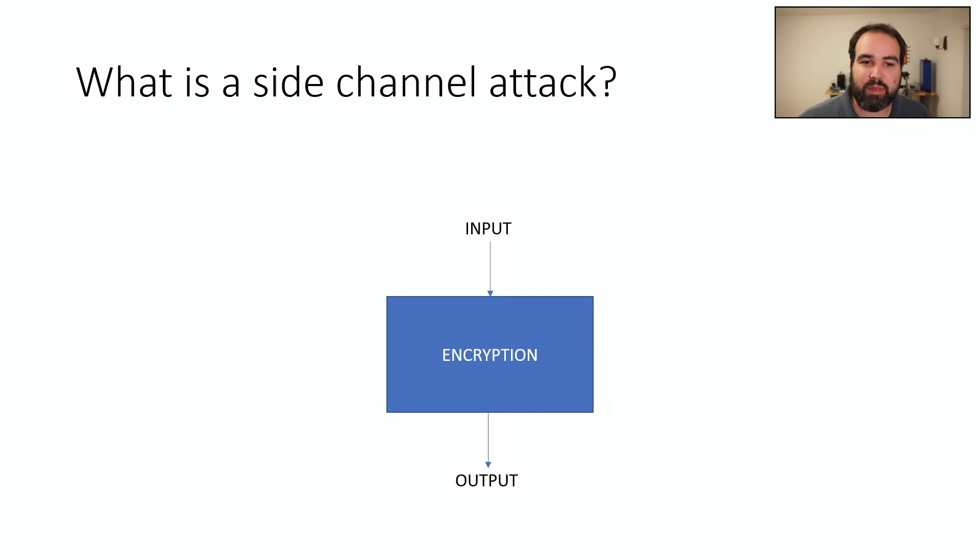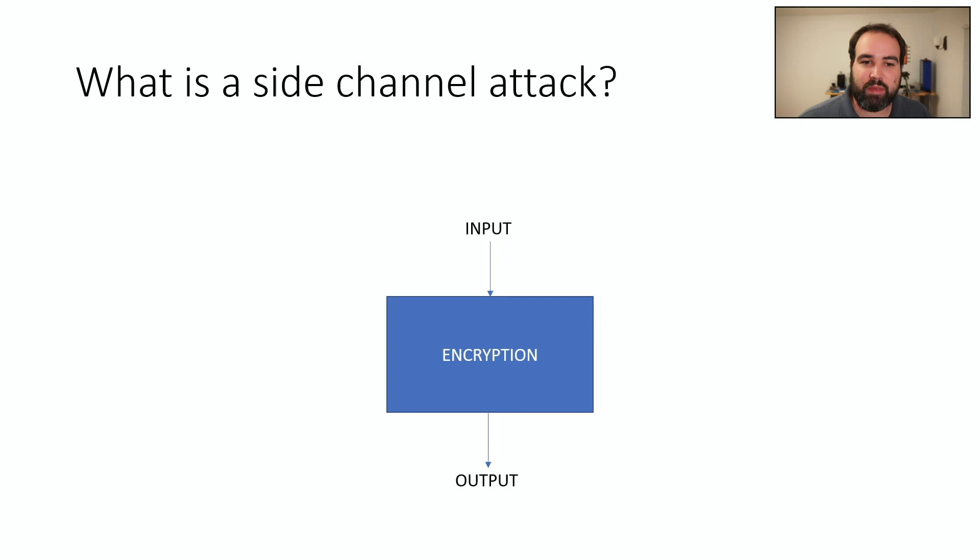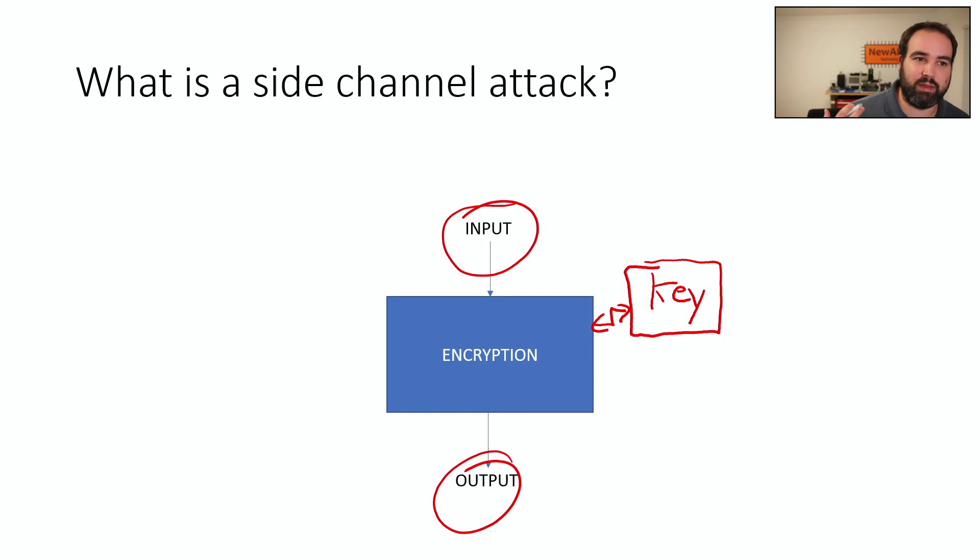But I'm going to give you a little background to what we mean when we talk about a side channel attack. So a side channel attack in general is this case where we have some algorithm. Normally it's a security algorithm like encryption. We have the input, we have the output, and there's always some secret. So we would normally have a key here that's super secure, and nobody is able to know that key. And the whole security of the algorithm is designed to really protect that key.